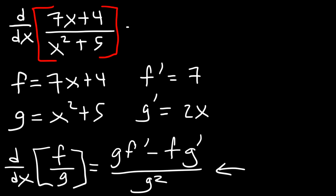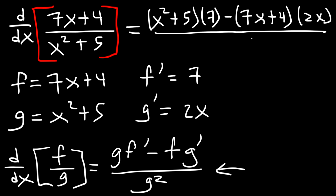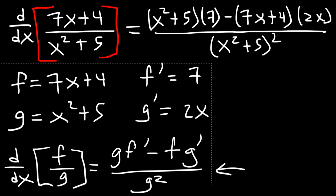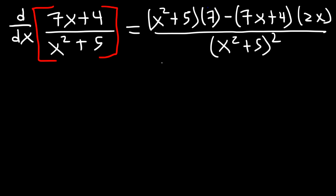Using this formula, this is going to be g, which is x squared plus 5, multiplied by f prime which is 7, minus f which is 7x plus 4, times g prime which is 2x, divided by g squared — that's x squared plus 5, squared. Some teachers will allow you to leave your answer like this; others will want you to simplify further, so we're going to do that.